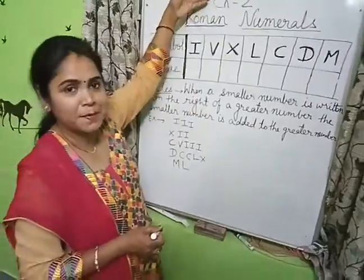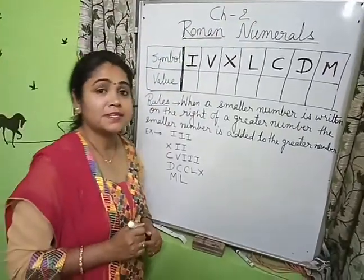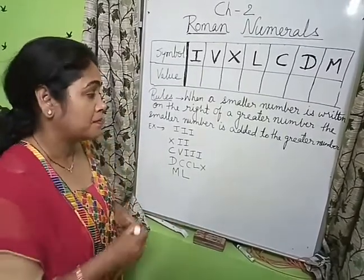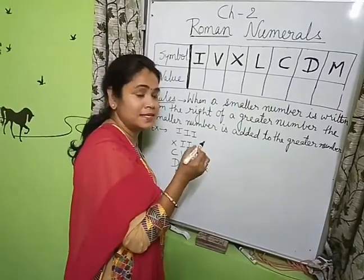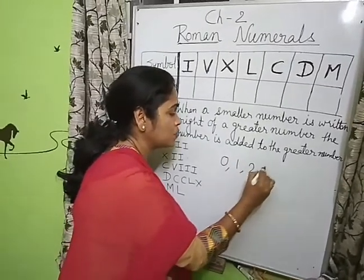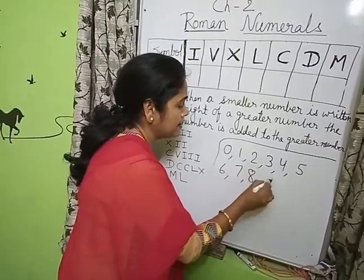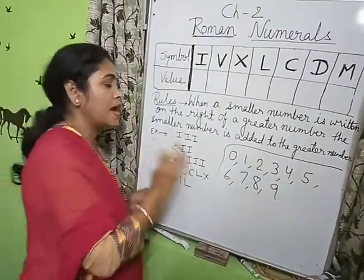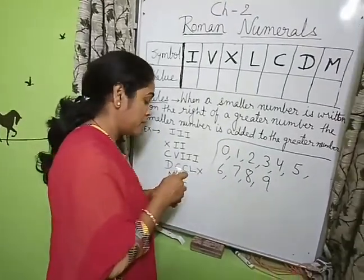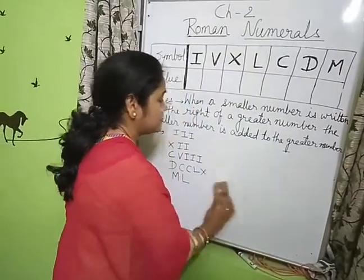Good morning. Today I will start Chapter 2. The topic is Roman Numerals. We have learned to write numbers in the Indian system and international place value system, and for that we have used digits — we can also say symbols. Those digits were 0, 1, 2, 3, 4, 5, 6, 7, 8, and 9. These are the digits used in both the Indian and international systems.